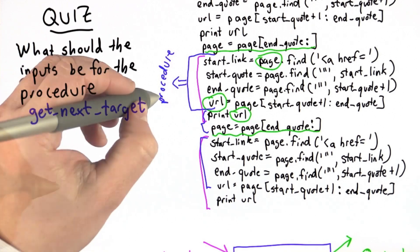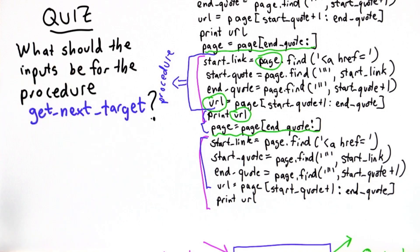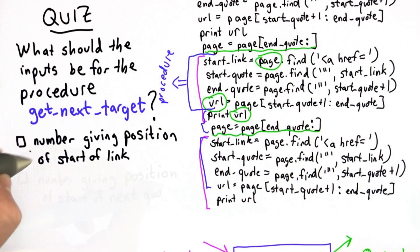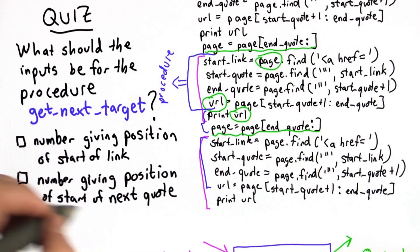Our question now is, in defining this procedure, what should its inputs be? The input could be a number giving the position of the start of the next link, or a number giving the position of the start of the next quote.